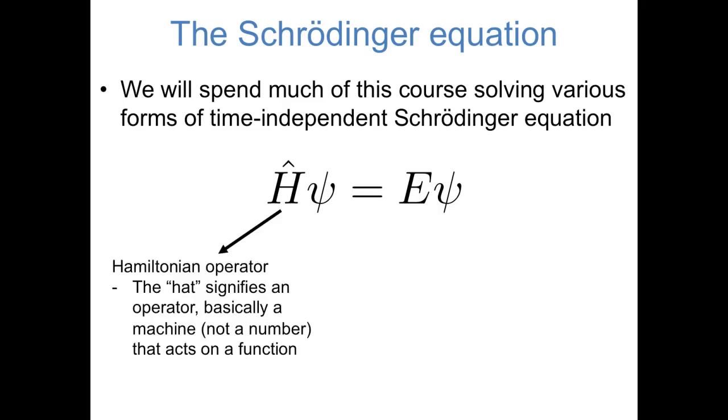The letter H represents the Hamiltonian operator. An operator is basically a machine, a series of operations that acts on a function. So in principle, an operator can tell you to multiply or divide or add or subtract a function by certain numbers. It can have derivatives in it. It's any series of operations.